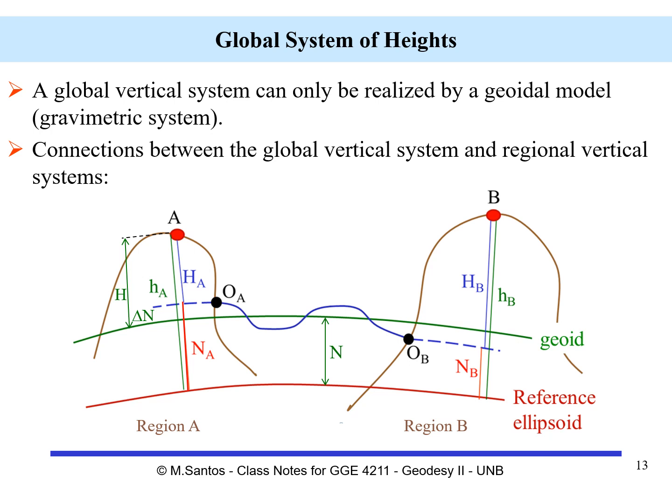Let us talk a bit about the global system of heights — this is something that is coming. We are very well familiar with the international terrestrial reference frames. These are 3D systems, but the heights in the ITRFs are heights with respect to the ellipsoid and are not good for a height system. An effort has been made over the decades looking for a realization of a global vertical system, which can only be done by means of a gravimetric system — a geoidal model.